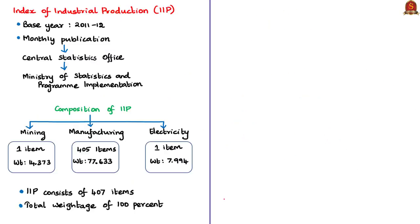The Index of Industrial Production also uses base year 2011-12. It is published every month by the Central Statistics Office under the Ministry of Statistics and Programme Implementation. The IIP is composed of three major industries — mining, manufacturing, and electricity — covering a total of 407 items, of which manufacturing has 405 items and mining and electricity have one each. Manufacturing has the maximum weightage of 77.6%, mining 14.3%, and electricity the least at 7.9%.